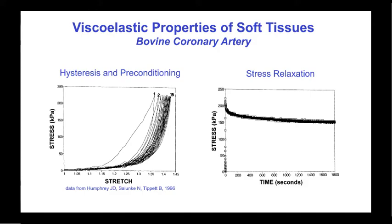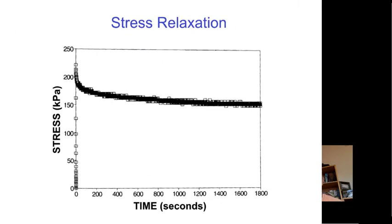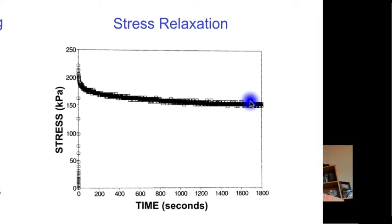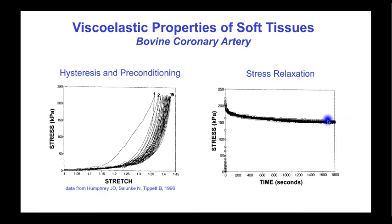Another common property of biological tissues that is not elastic is stress relaxation. When strain is increased and held constant over time, the stress increases instantaneously but then decays until it settles at a new, lower value. This stress relaxation is commonly seen in soft biological tissues. All of these properties — hysteresis, preconditioning, and stress relaxation — are displayed by viscoelastic materials, and viscoelasticity is a common and important property of soft tissues in biomechanics.